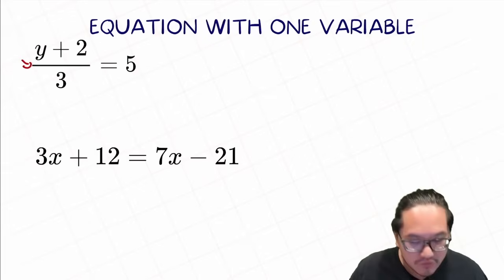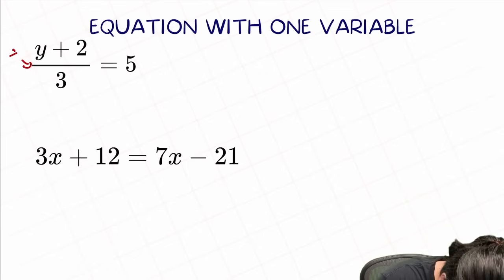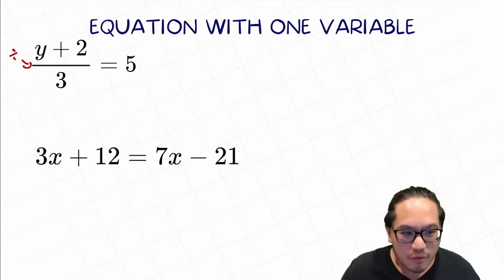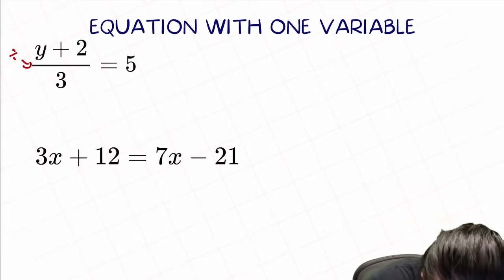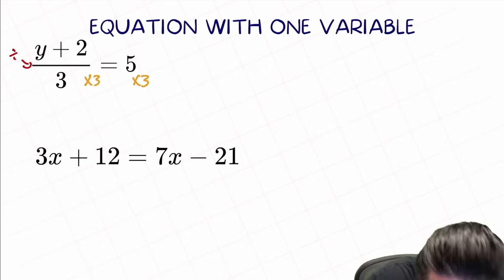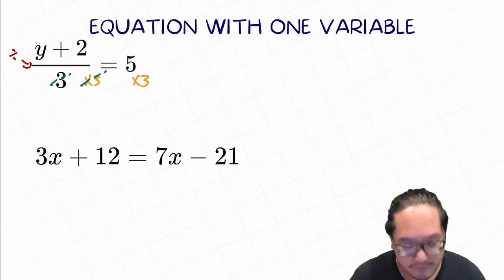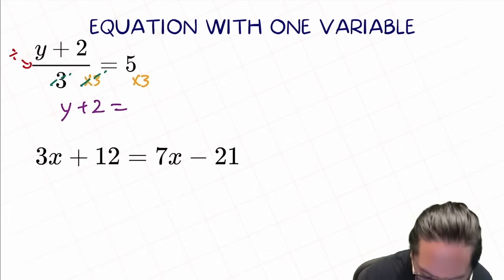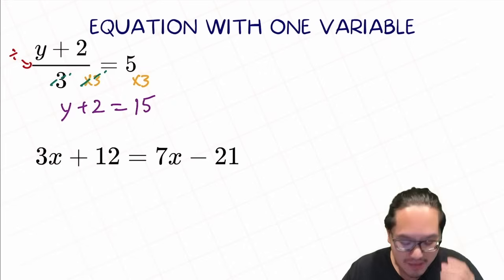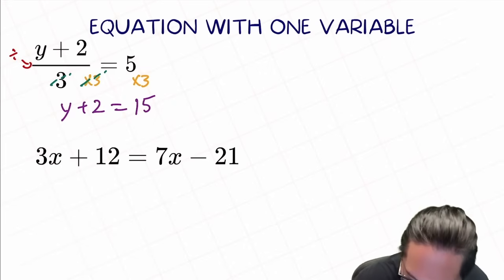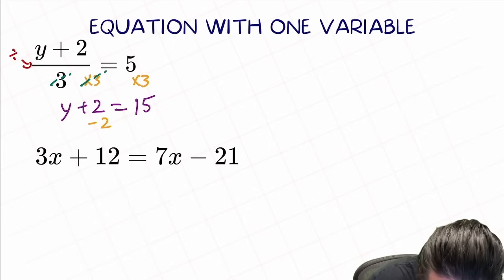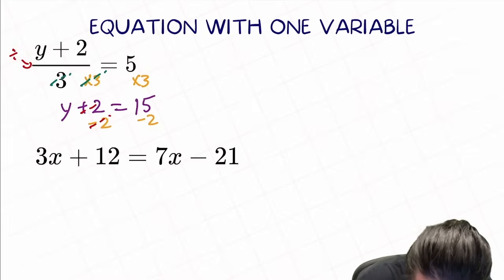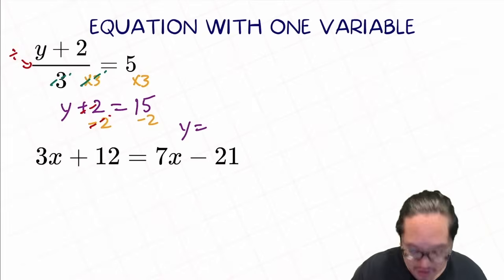Remember, this fraction line is just equal to divide — divided by 3. What we can do immediately is multiply 3 on both sides to eliminate the denominator. What we have left is y plus 2 equal to 5 times 3, equal to 15. Now we just need to eliminate the plus 2, so we minus 2 on both sides to cancel that out. All we have left is y equal to 15 minus 2, which is 13.